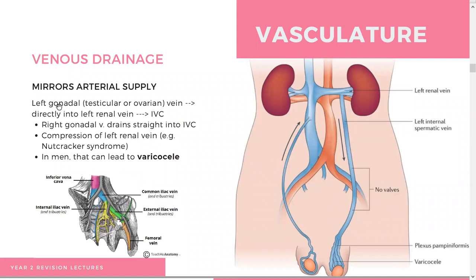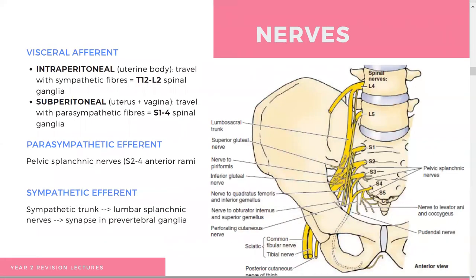For venous drainage, the important thing to remember is that the left gonadal vein — testicular or ovarian — drains directly into the left renal vein and then into the IVC. This can cause nutcracker syndrome if that left renal vein is compressed. It's usually presented in males but can happen to anybody; in men it can lead to varicocele.